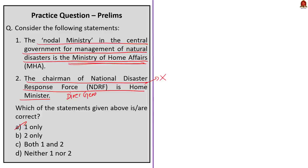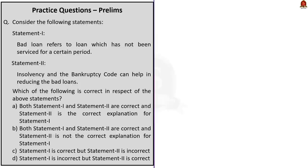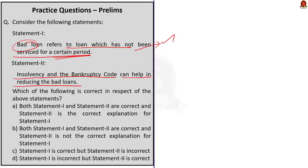Question number two: Bad loan refers to a loan which has not been serviced for a certain period. Insolvency and Bankruptcy Code can help in reducing bad loans. Both statements are correct — the term 'service' refers to repayment of the loan, and IBC indeed helps reduce bad loans. However, statement two is not the correct explanation for statement one. So the answer is option B: both statements are correct but statement two is not the correct explanation for statement one.